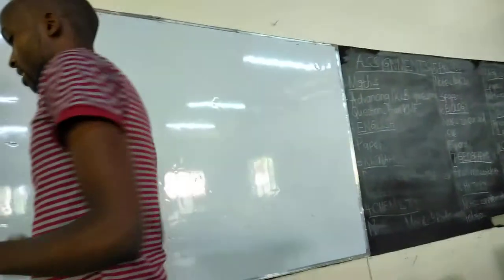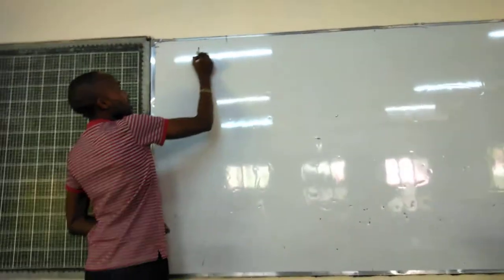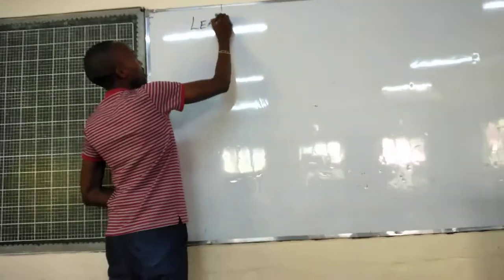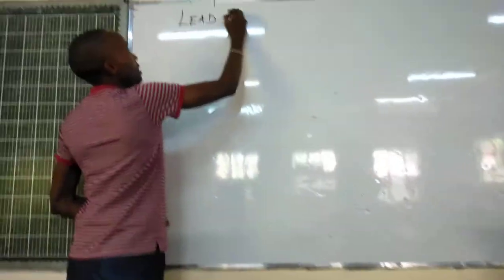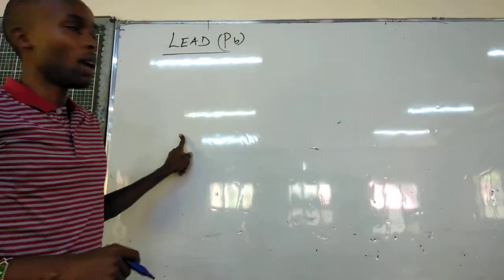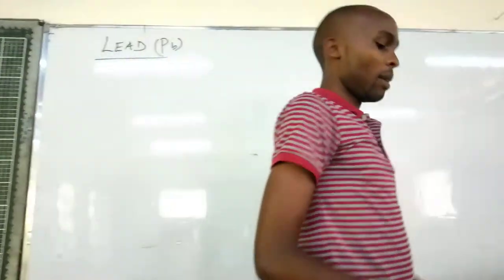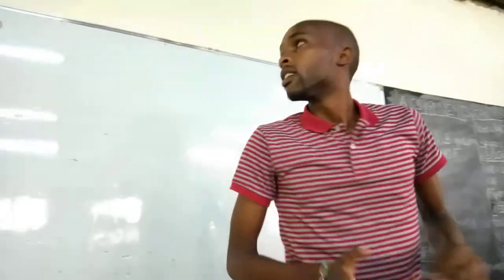Welcome again. Today we will look at the next method, which is Lead. The Latin name is Plumbum. PB is the chemical symbol.